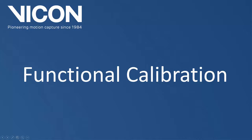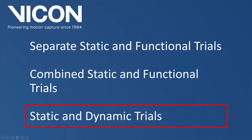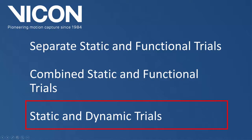For all subjects where you want to use a custom VST, make sure that you have at least a static and a functional trial. There are different ways you can do this. The first is to capture separate static and functional trials. The second is to capture a single functional trial where the subject starts in the base pose. And the last is to capture a static trial and use one of the dynamic trials for the functional calibration. The first two methods are the preferred workflows while the third would be used in cases where a functional range of motion trial may not be possible.